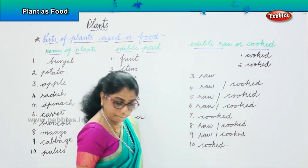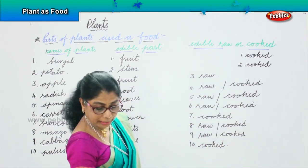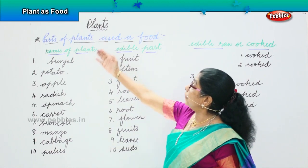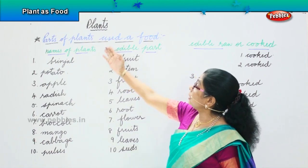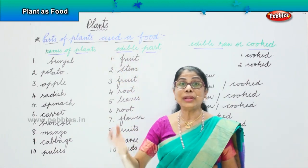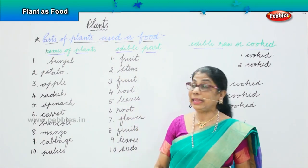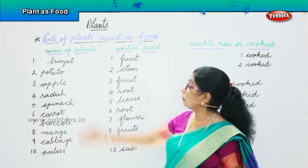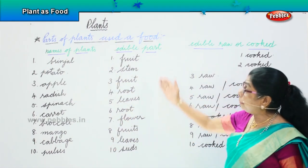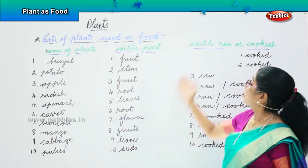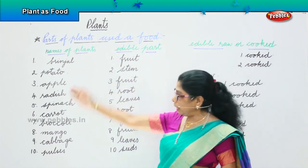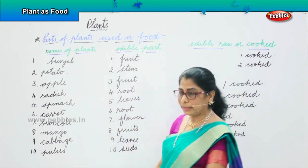What did we look at today? We looked at plants — parts of plants used as food in our daily life: names of plants, edible part, and whether eaten raw or cooked. We have ten of them here.